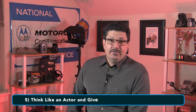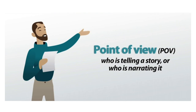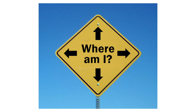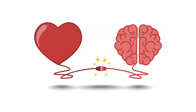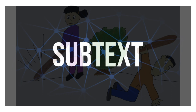Tip number five: think like an actor and give your character a point of view. Actors always talk about finding their point of view — they need motivation for a scene. They need to know where the character was at the moment before they stepped into the room that the scene opens in. They need to know what their character is really thinking and feeling when they are beating around the bush and allowing for the subtext of a scene to play out.